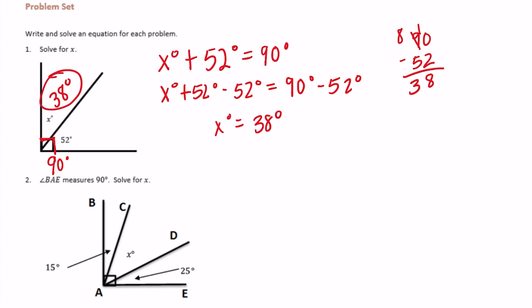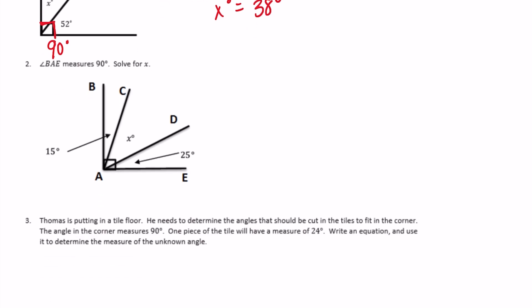Number 2. Angle BAE measures 90 degrees, so again the whole thing is 90 degrees. Solve for x. We know one angle is 15 degrees, another is 25 degrees, and x. So all three of those add up to 90 degrees: 15 degrees plus x degrees plus 25 degrees is equal to 90 degrees.